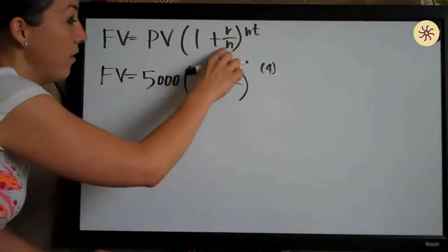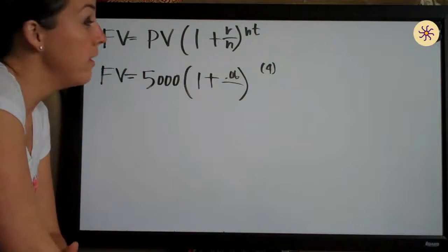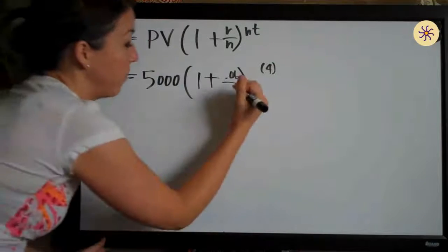So n represents the number of times per year that the interest is compounded. Since we're compounding monthly, n will be equal to 12.